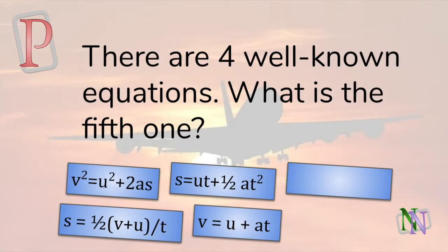We start with the puzzle. Many physics students have seen the four well-known equations of motion here, but in fact, since there are five variables, there is also a fifth equation. Do you know what it is? The solution will be given near the end of the video.